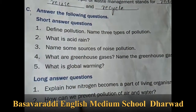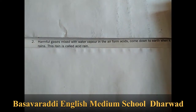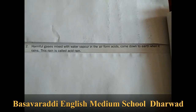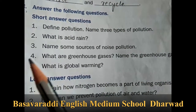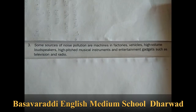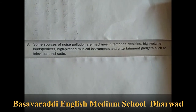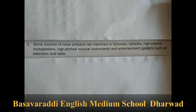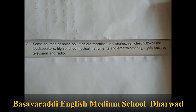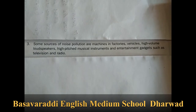Second question: what is acid rain? Answer: harmful gases mixed with water vapour in the air form acids that come down to the earth when it rains — this rain is called acid rain. Third question: name some sources of noise pollution. Answer: some sources of noise pollution are machines in factories, vehicles, high-volume loudspeakers, high-pitched musical instruments, and entertainment gadgets such as television and radio.